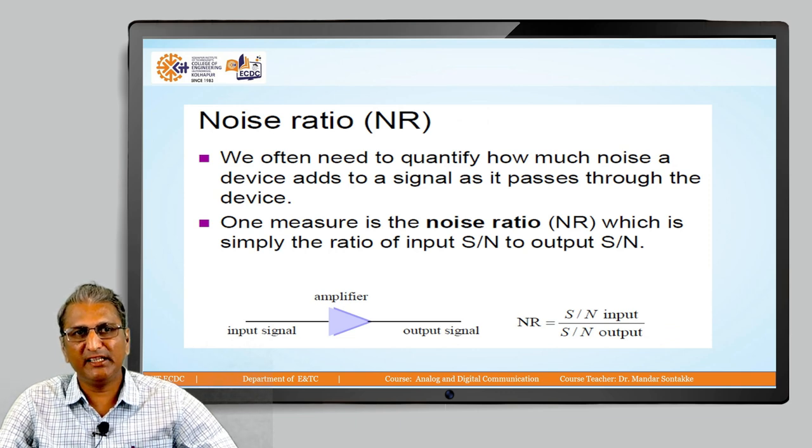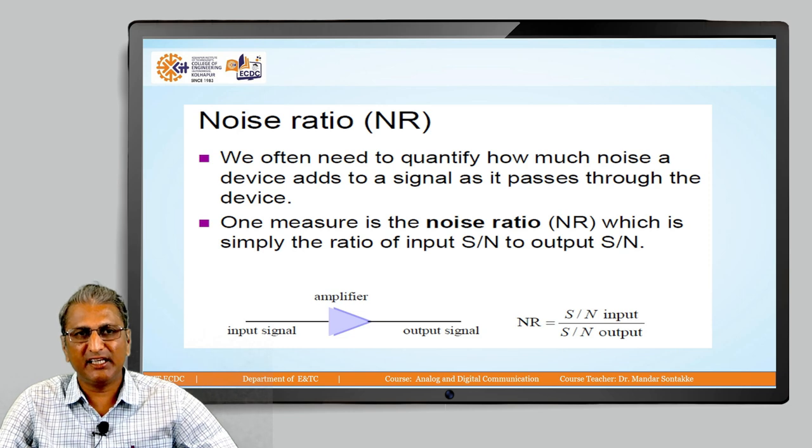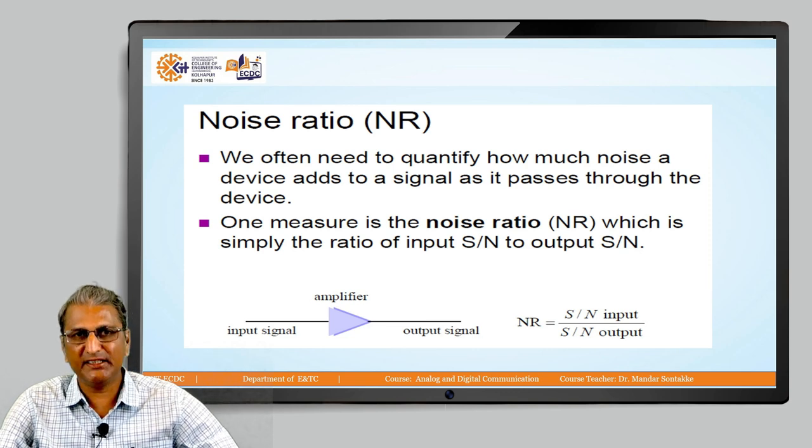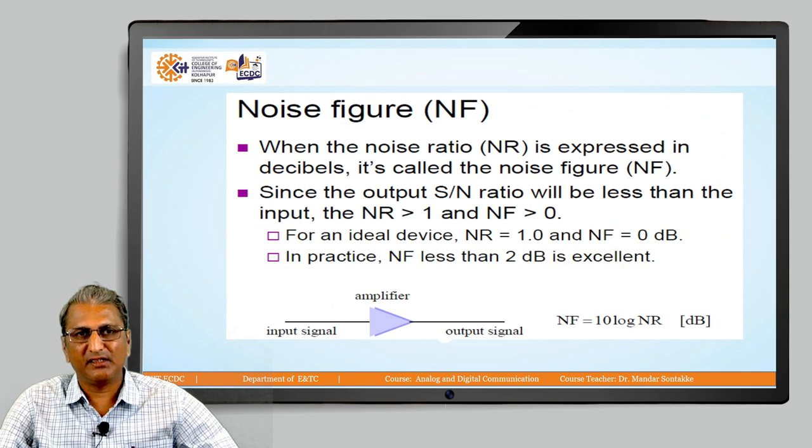Noise ratio: we often need to quantify how much noise the device adds to a signal as it passes through the device. This is the noise ratio. See the input signal, amplifier, and the output signal. So the noise ratio will be signal upon noise input and signal upon noise output. This is called SNR. Also, it is denoted by noise figure NF.